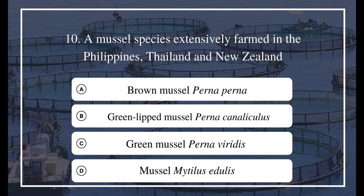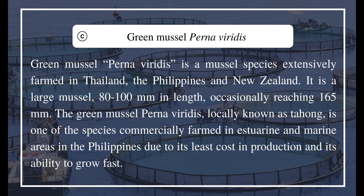Question 10: A mussel species extensively farmed in the Philippines, Thailand, and New Zealand — a) Brown mussel Perna perna, b) Green-lipped mussel Perna canaliculus, c) Green mussel Perna viridis, d) Mussel Mytilus edulis. The answer is C, green mussel Perna viridis. Green mussel Perna viridis is a mussel species extensively farmed in Thailand, the Philippines, and New Zealand. It is a large mussel, 80 to 100 millimeters in length, occasionally reaching 165 millimeters.